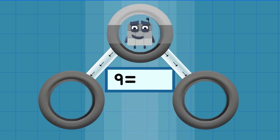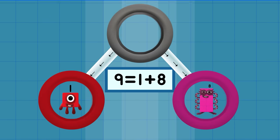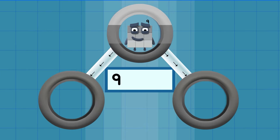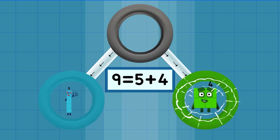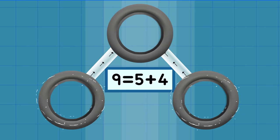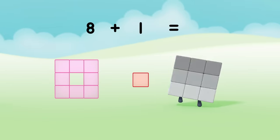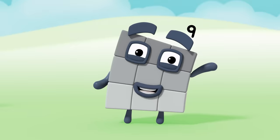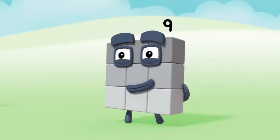Nine equals one plus eight. Nine equals five plus four. Eight, three plus one equals nine. I am nine, and I feel fine. Square!